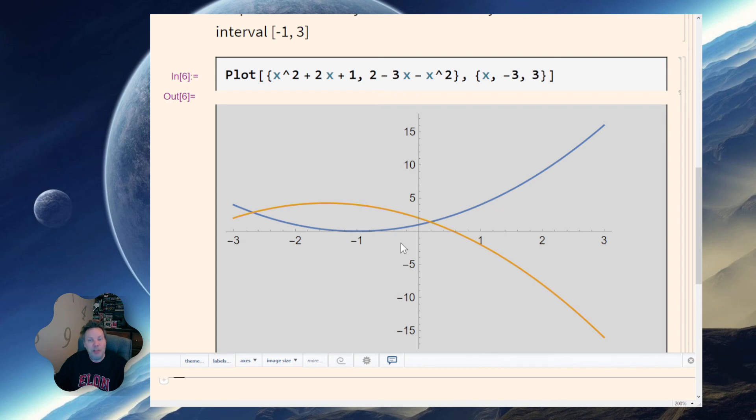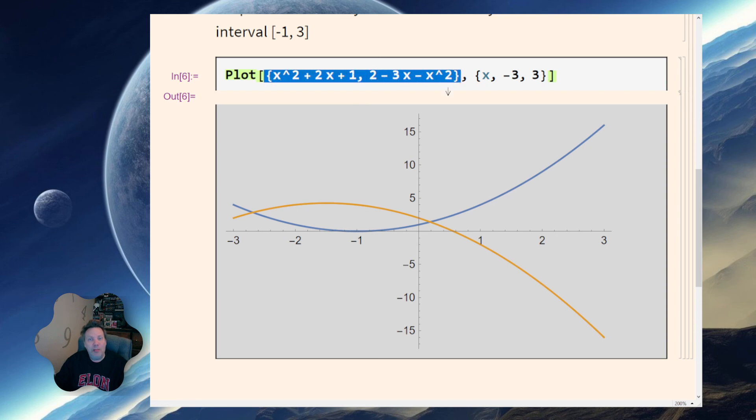Like I said, in a later video I'll talk about the solve command to actually figure out those intersection points. A quick recap: P-L-O-T capital P, I'm going to have my first function and my second function, and I'm going to enclose those in curly braces. My plotting domain is exactly the same that I had before: variable, minimum x value, maximum x value.